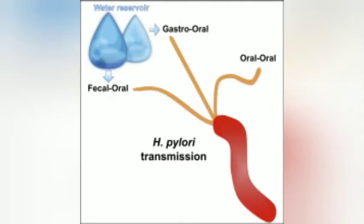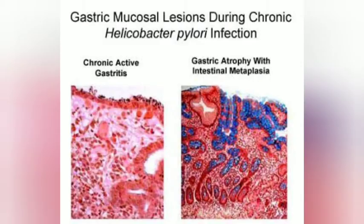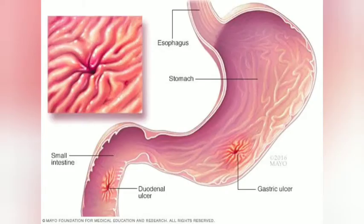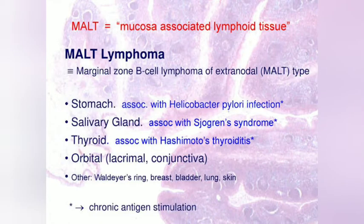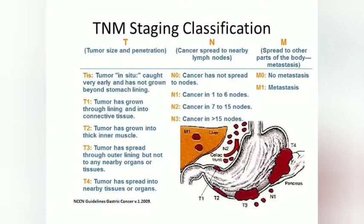Transmission is through oral-to-oral or fecal-to-oral routes. It causes chronic gastritis which can lead to peptic ulcer disease, particularly in the duodenum, as well as mucosa-associated lymphoid tissue (MALT) lymphoma and gastric adenocarcinoma.